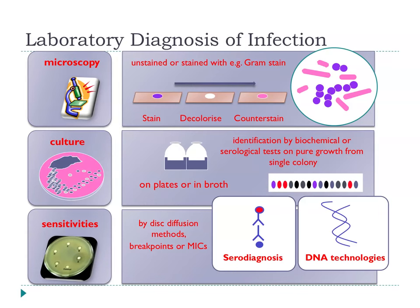When the busy house officer wants to request a microbiological investigation, they scribble 'MC&S' on the form — standing for Microscopy, Culture, and Sensitivities. This very largely summarises the traditional approach to the diagnosis of bacterial infection. We look down the microscope with or without a stain, we culture the organism on agar plates or in liquid medium, and we determine their sensitivities or susceptibilities to antibiotics. On top of that, we have immunological approaches such as serodiagnosis, and now DNA technologies.